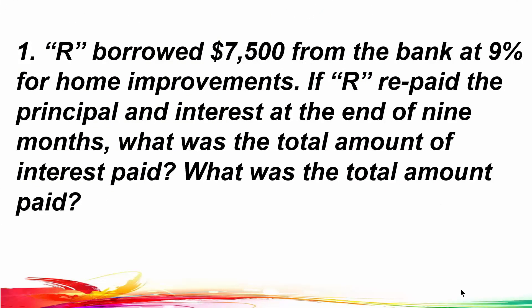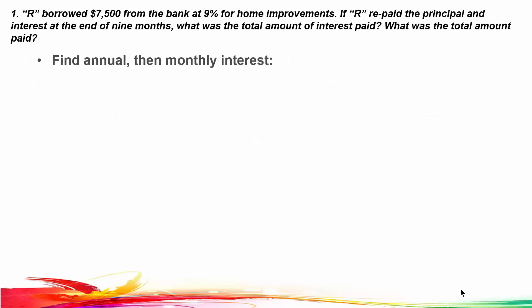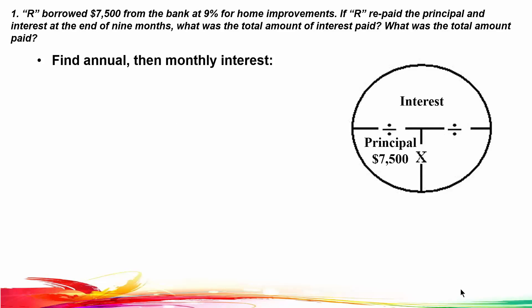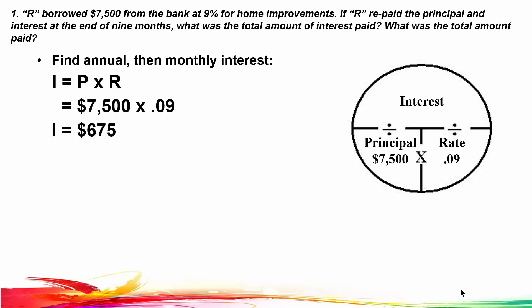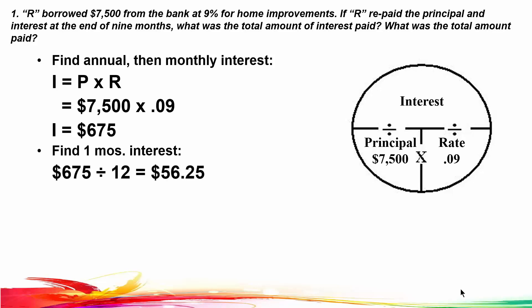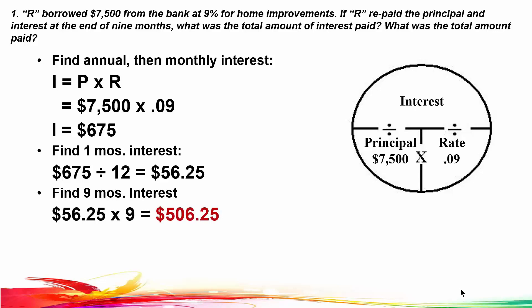Problem number one: R borrowed $7,500 from the bank at 9% for home improvements. If R repaid the principal and interest at the end of nine months, what was the total amount of interest paid and what was the total amount paid? Let's set up our problem. Interest equals principal times rate: $7,500 times 9% gives us annual interest of $675. But we're asked to find nine months, so we take $675 divided by 12 months, which is $56.25 per month. Then nine months interest is $56.25 times nine, which equals $506.25.